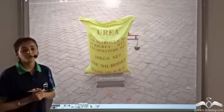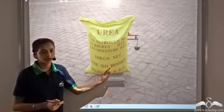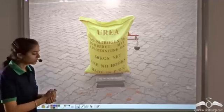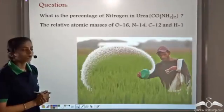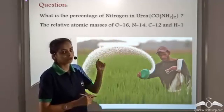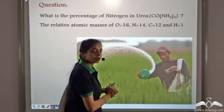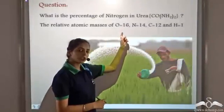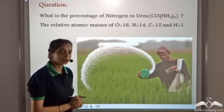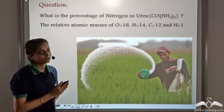Urea is a very important fertilizer for soil and for many crops, because it contains nitrogen, which is very good and healthy for plants. So what is the percentage composition of nitrogen present in urea? The formula of urea is CO(NH2)2, and we are given the relative atomic masses of oxygen, nitrogen, carbon, and hydrogen. Let's calculate the percentage composition of the entire nitrogen present in urea.